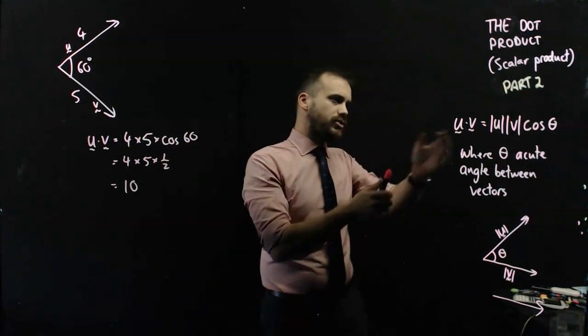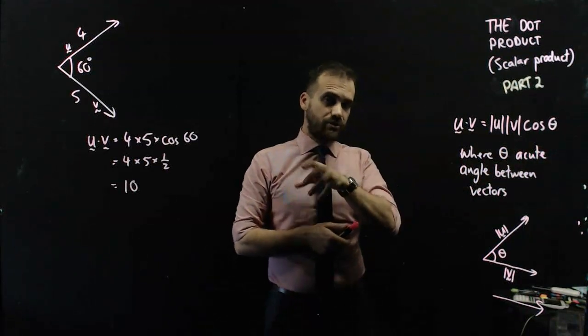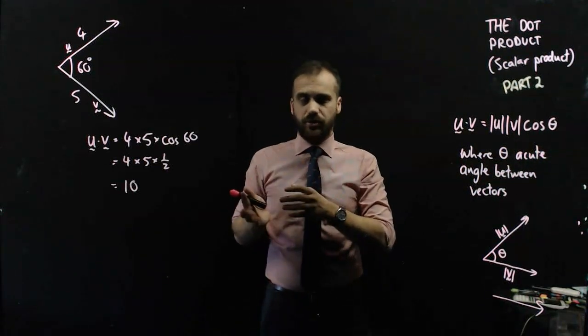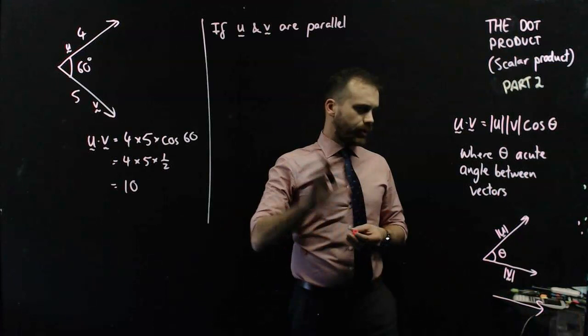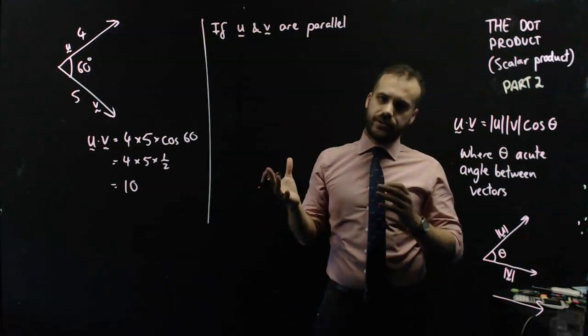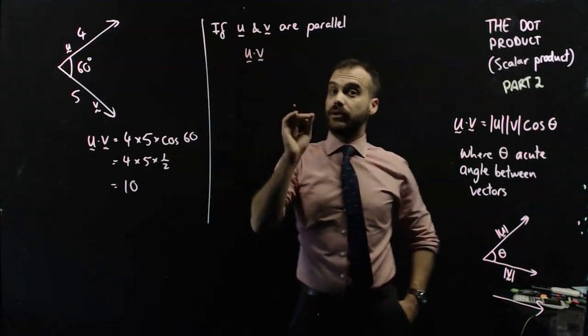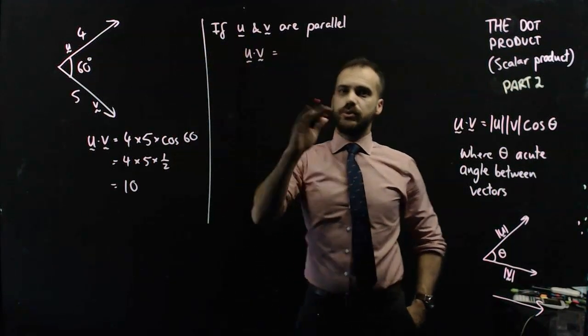Now the fact that the dot product can be defined in this way is actually interesting, and it's got a couple of unique properties for the dot product. Now if u and v are parallel, something interesting happens. So if we do u dot v for parallel vectors, what do we get?